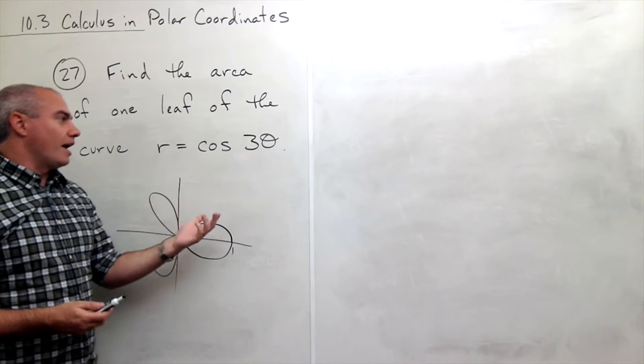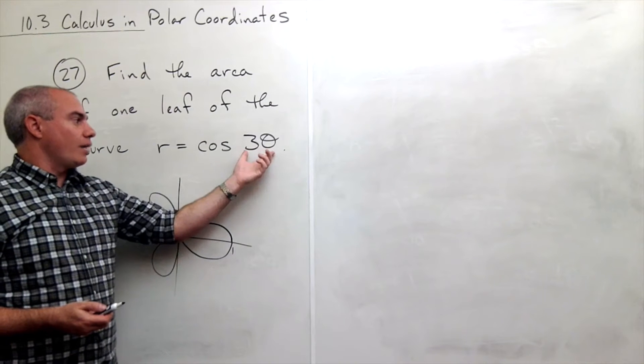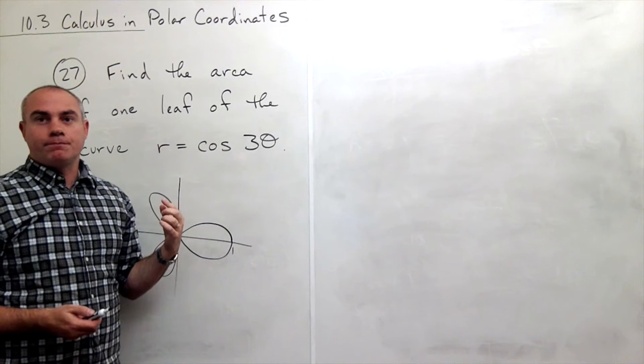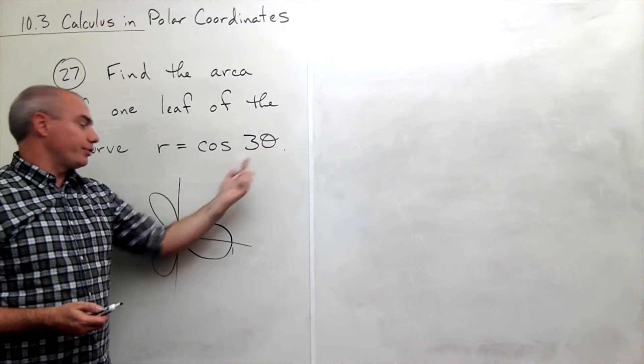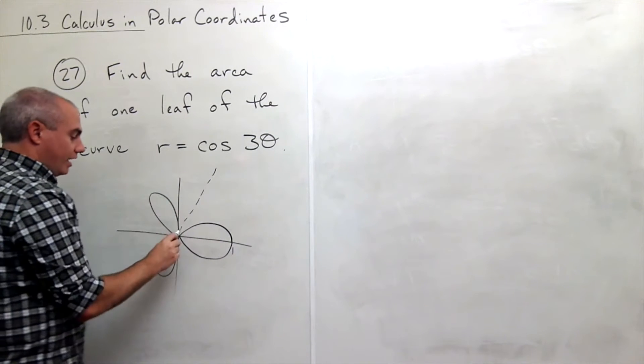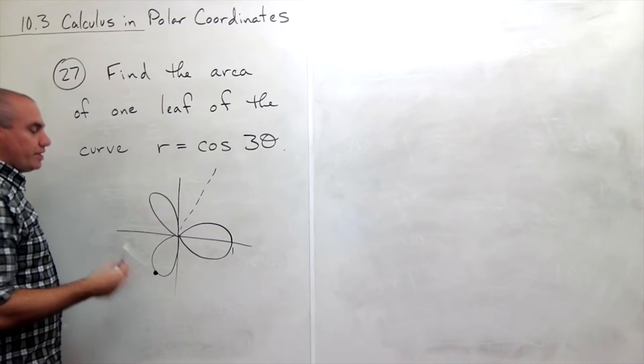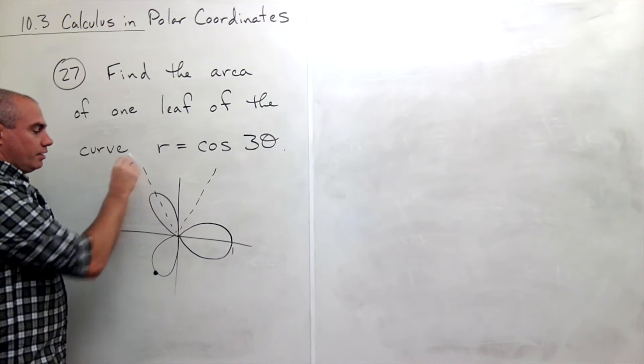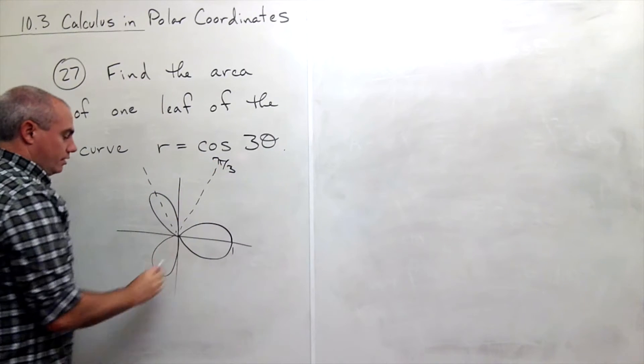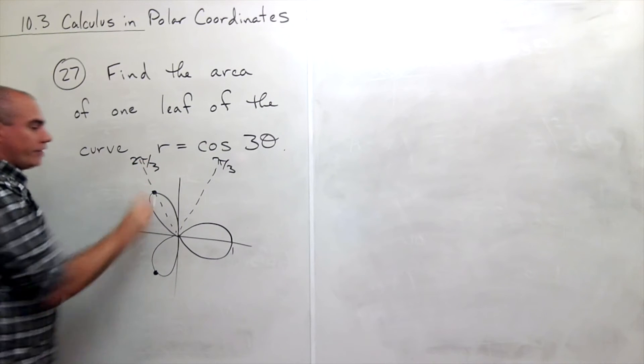Well how about pi? Pi would make it and what would I have to plug in for theta to get pi? Well I'd have to plug in pi over three for theta. So pi over three which is right here I go negative one and I'm right here. So we start to see the idea and this one is pi over three I'm right here and this is two pi over three and I would be right here.